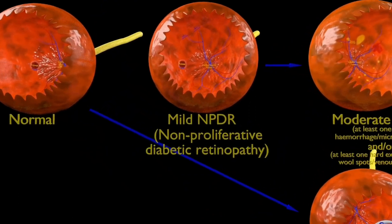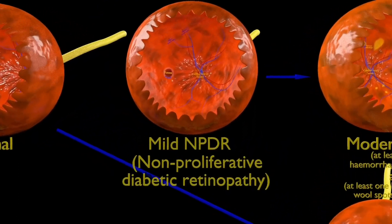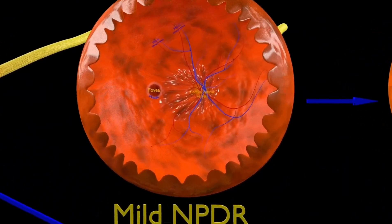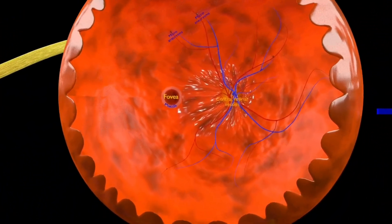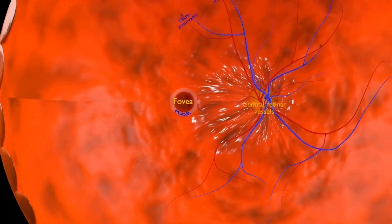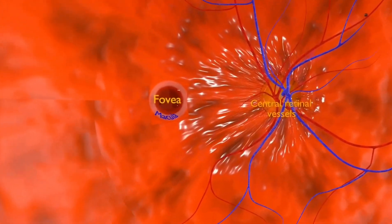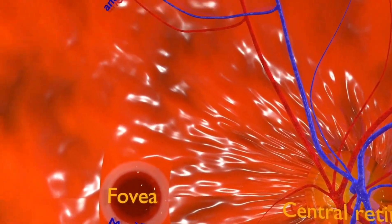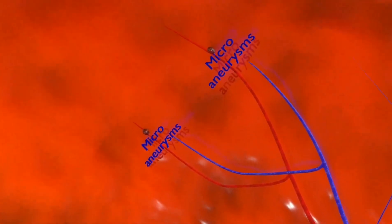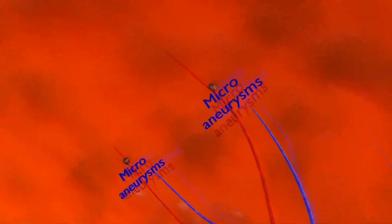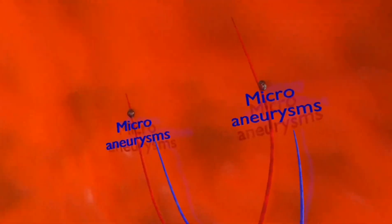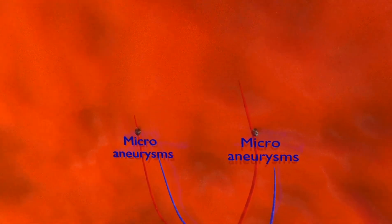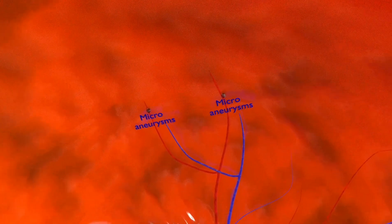This retina shows mild NPDR. As you can see, there are microaneurysms in the artery. Retinal microaneurysms are the most typical lesions of diabetic retinopathy and are caused by damage to blood vessels.